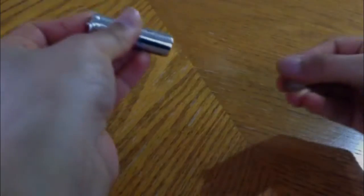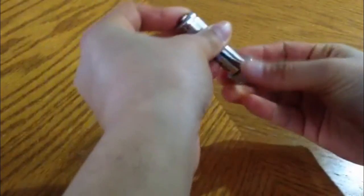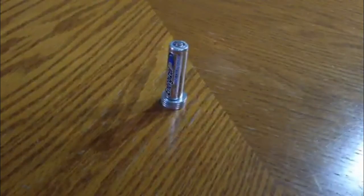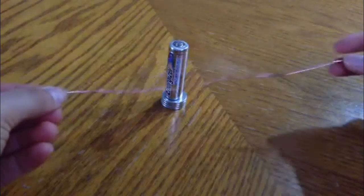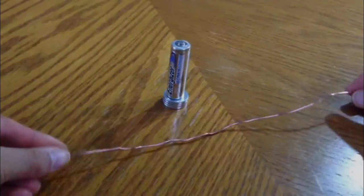To make the homopolar motor, first off, attach the earth magnets to the negative end of the battery, then cut the copper wire to the desired length. I used 25 cm.